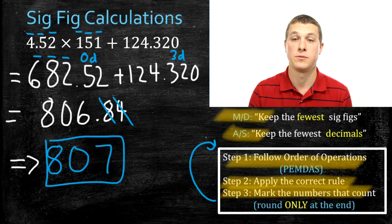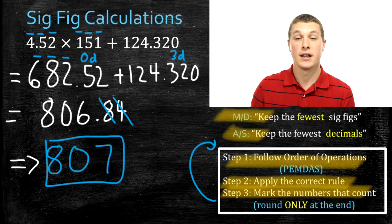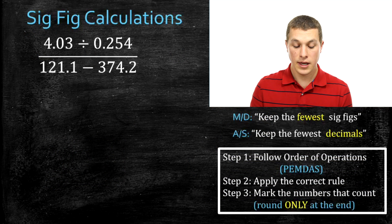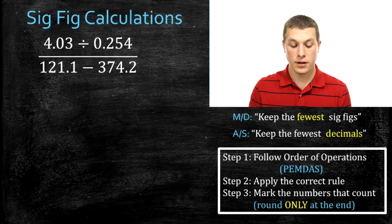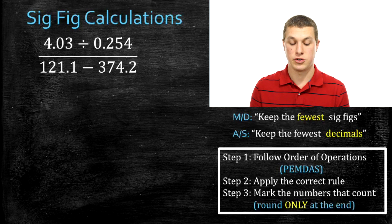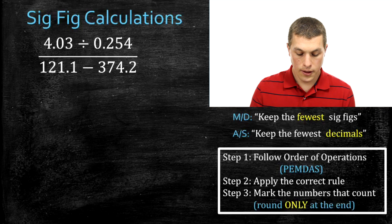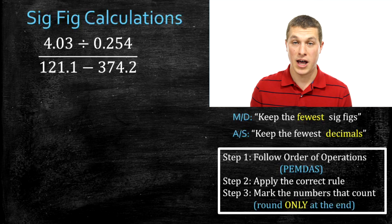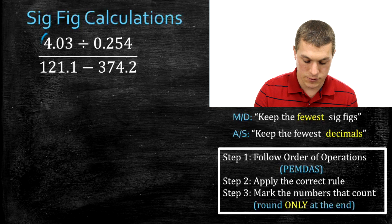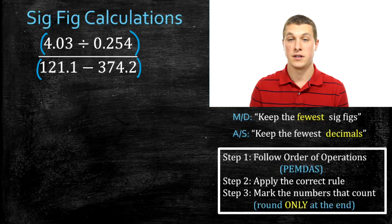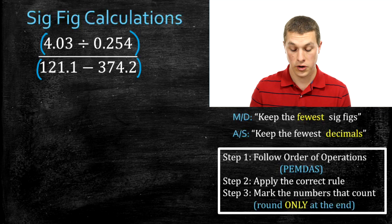That's how we combine the addition-subtraction rules and multiplication-division rules. Let's do a few more examples. Here we have 4.03 divided by .254, and we're going to divide that all by a subtraction problem. Whenever you see a number on the top and bottom of a fraction line, there are implied parentheses around the numerator and denominator, even though they aren't explicitly written.